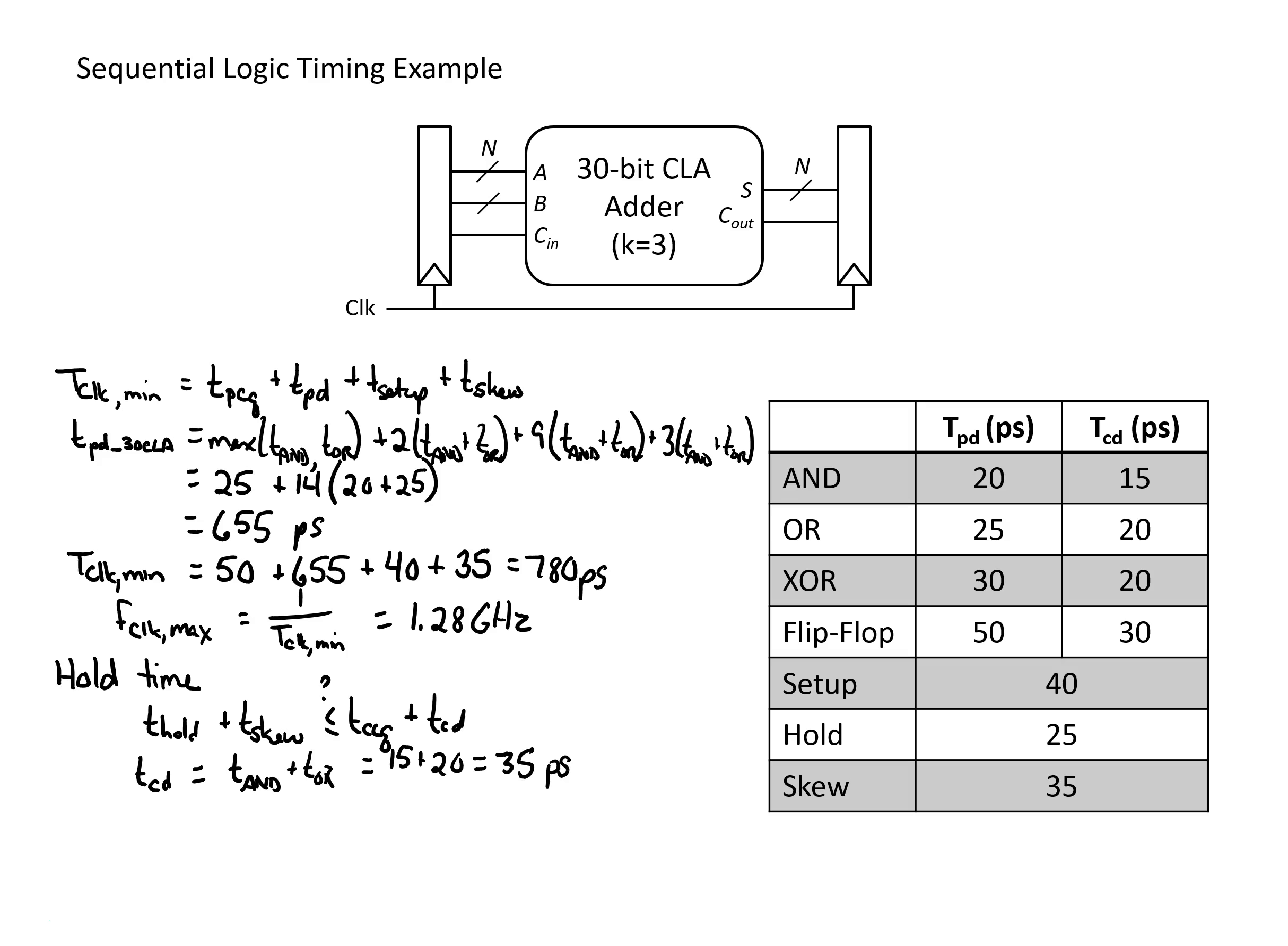If we put this into the equation, we've got 25 picoseconds for a hold time, a skew of 35, and we're interested if that's less than 30 plus 35. We find out after doing the math that indeed 60 is less than 65, and so we meet our hold time. We could reasonably operate this circuit at 1.28 GHz while not violating any of our timing specifications.